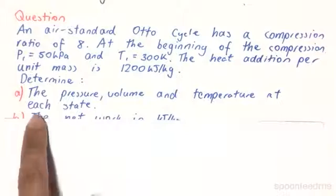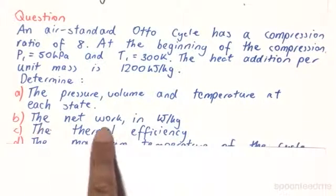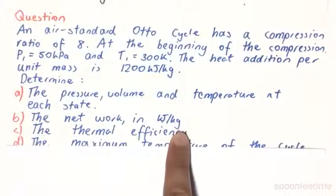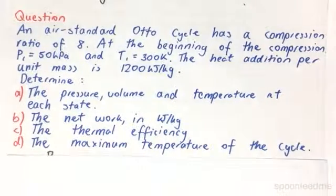So determine A, the pressure, volume and temperature at each state, B, the network in kJ per kilogram, C, the thermal efficiency, and D, the maximum temperature of the cycle.